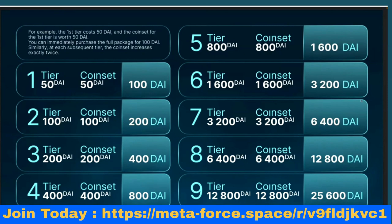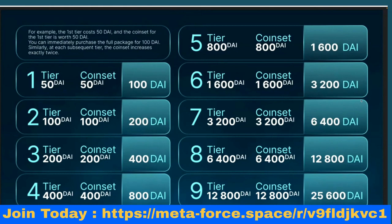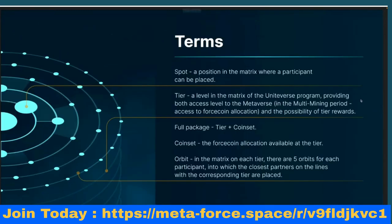There is a mechanism called deca-halving. The big block of coins is divided into 10 small blocks, each starting at 200 Force coins for the first tier. Here are the key terms to know: a spot is the position in the matrix where a participant can be placed. A tier is a level in the UniVerse matrix program providing access levels to the metaverse, access to Force coin allocation, and the possibility of tier rewards. The full package is tier plus coin set. The coin set is the Force coin allocation available at the tier.